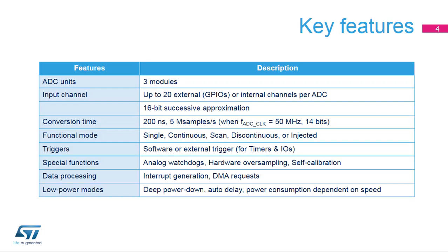Three analog-to-digital converters are integrated inside STM32H7 products. The input channel is connected to up to 20 channels, capable of converting signals in either single-ended or differential mode. The ADCs can convert signals at 5 mega-samples per second in 14-bit mode. There are several functional modes and triggering methods. The ADC has an analog watchdog for monitoring thresholds and offers oversampling to extend the number of bits in the final conversion value.